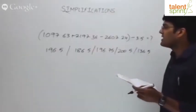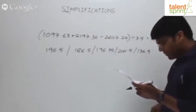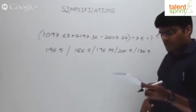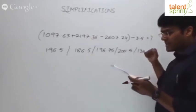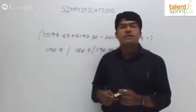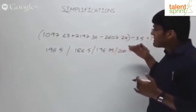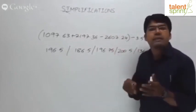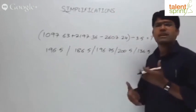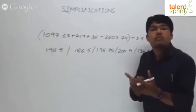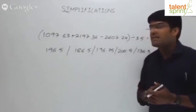Let's take this question: 1097.63 plus 2197.36 minus 2607.24 divided by 3.5 equals what? Options: 196.5, 186.5, 196.75, 200.5, 136.5. This involves division, so let's check how the root-digit method can help us get the answer.